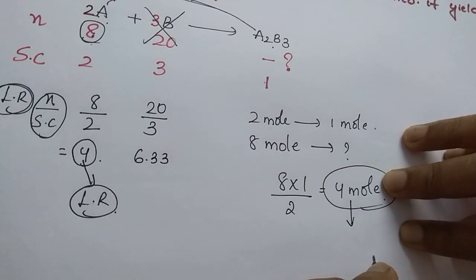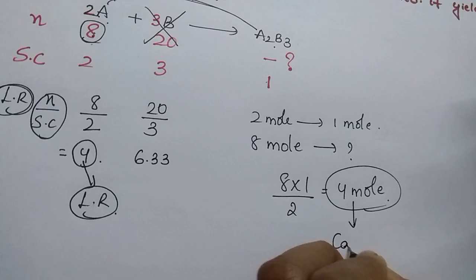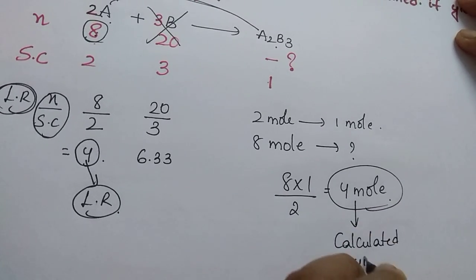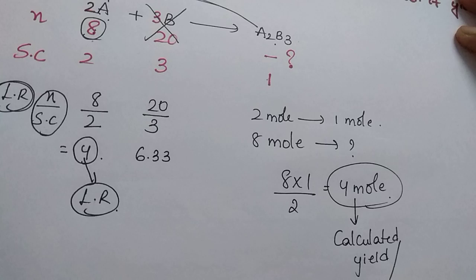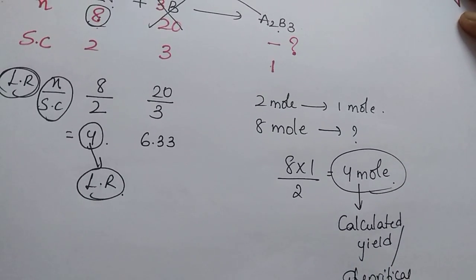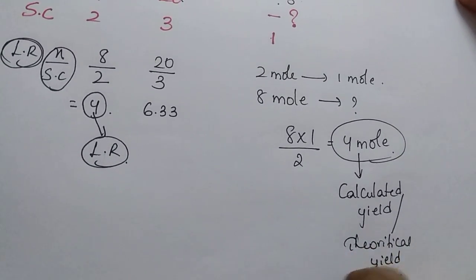This is the number of moles of product calculated, or you can say this is the calculated yield of product, or the theoretical yield. This 4 moles is the theoretical yield.